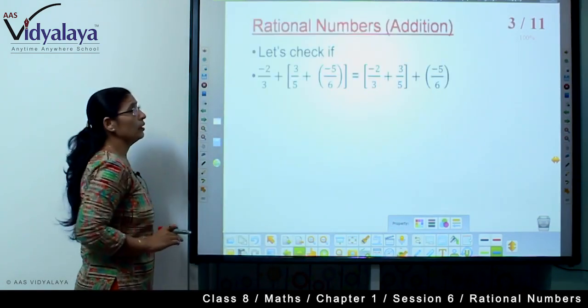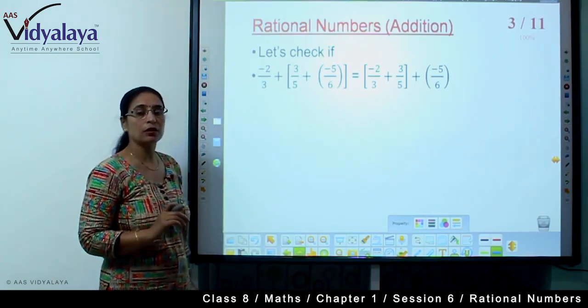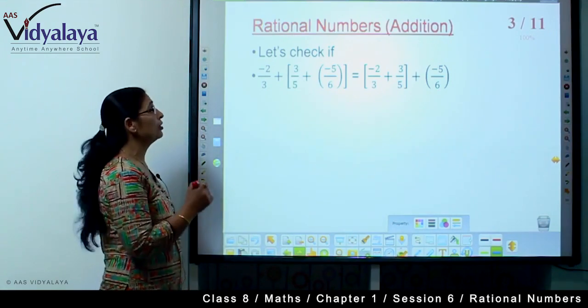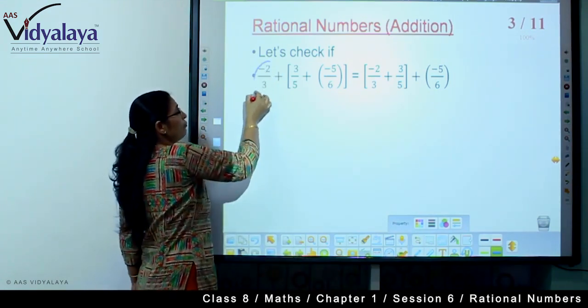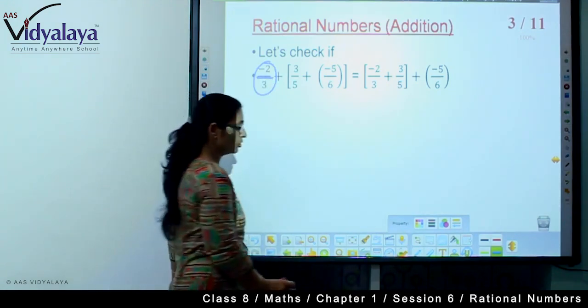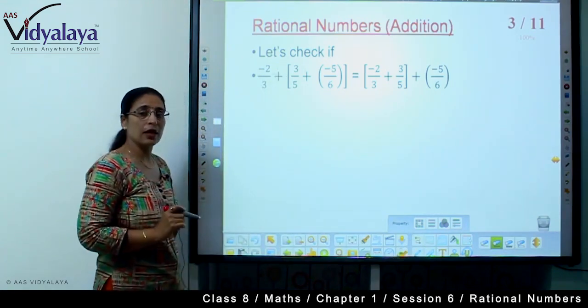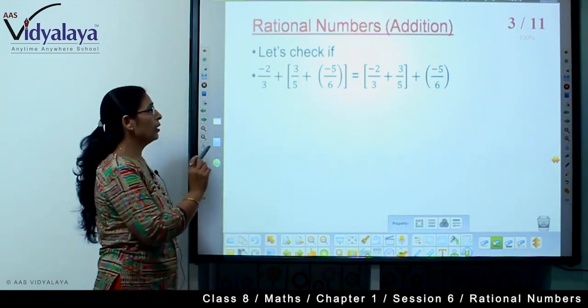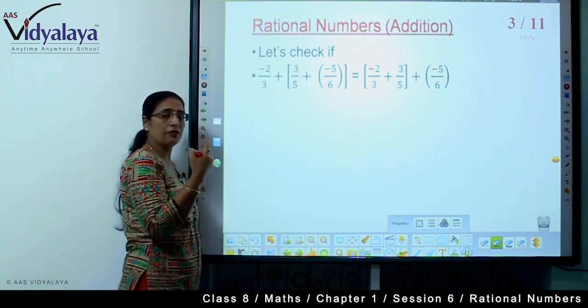So let us see, this is the addition of rational numbers. You have added whole numbers and integers. Today we are doing rational numbers, like we have learned in previous sessions. When the numbers are written in fraction form, these are known as rational numbers.